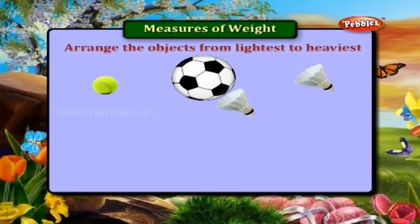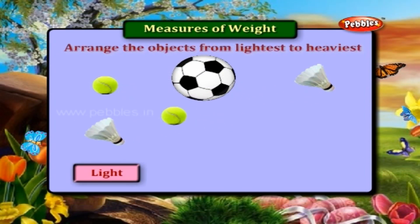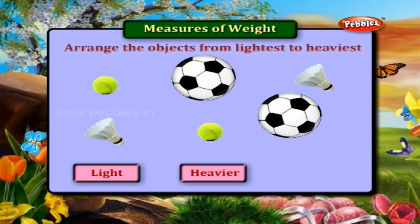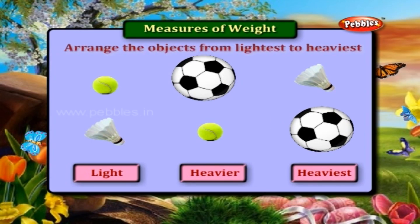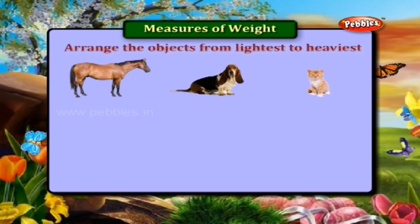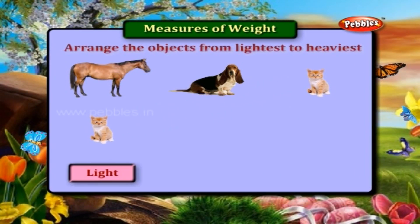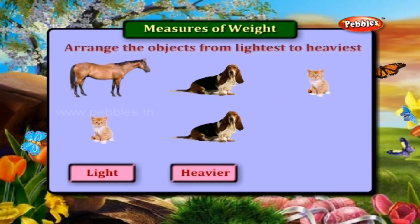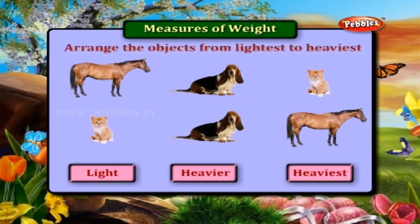The cork is light. The cricket ball is heavy. The football is the heaviest. The cat is light. The dog is heavy. And the horse is the heaviest.